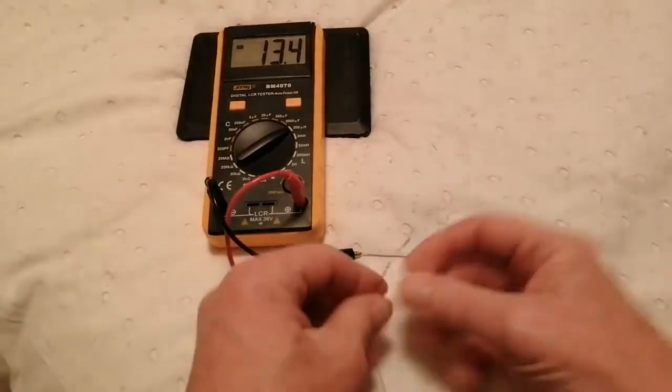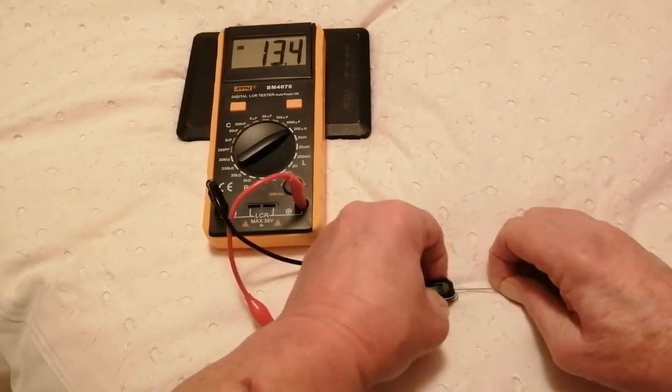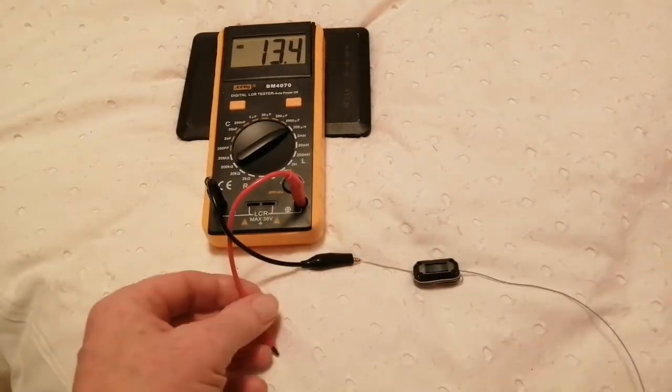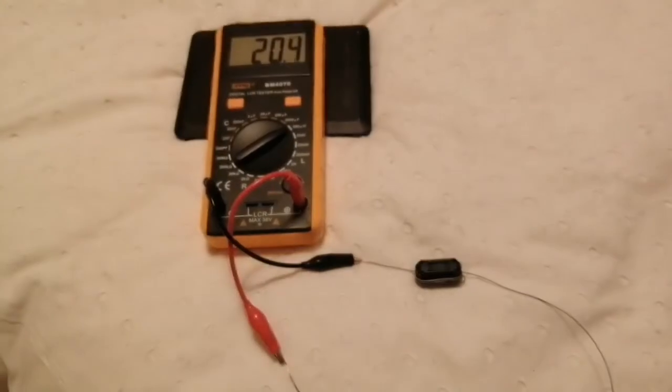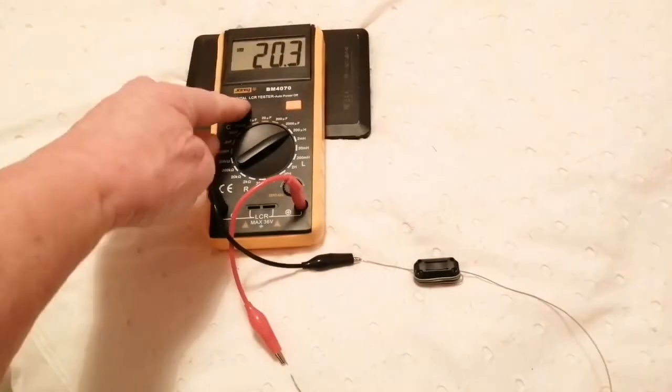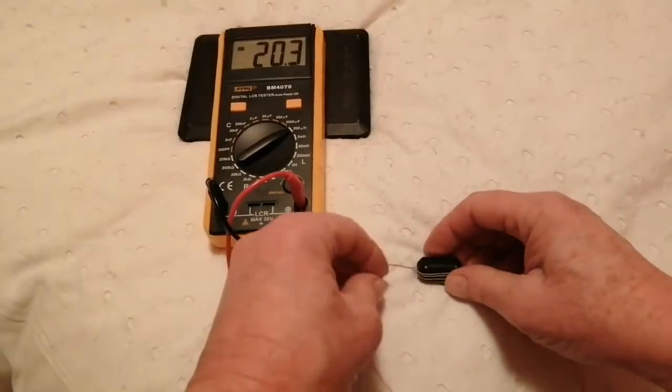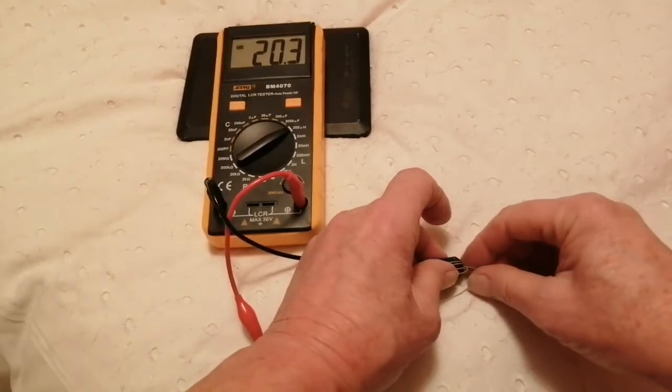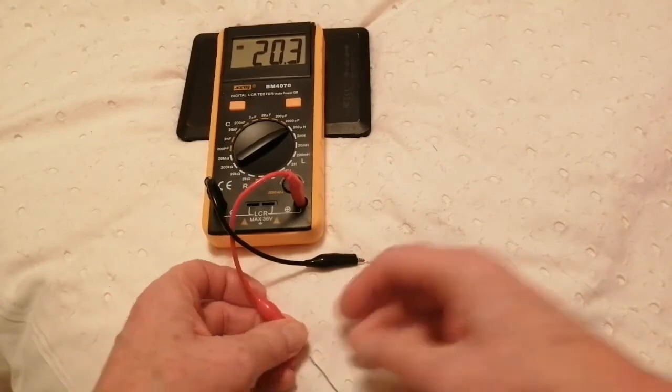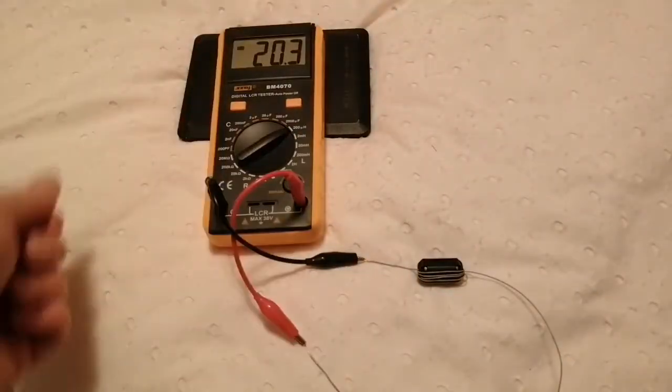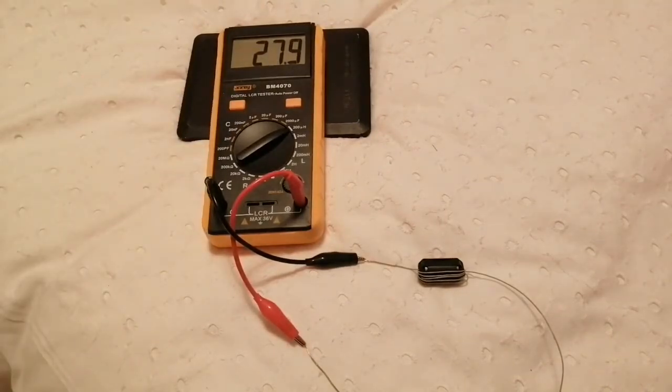That was three turns and four passes, so let's go to four turns and five passes. Okay, what was that? That was one, two, three, four turns. Let's do five turns. I know I could shorten this video by doing all this fast, but you probably want to see what I'm doing. 27.9.